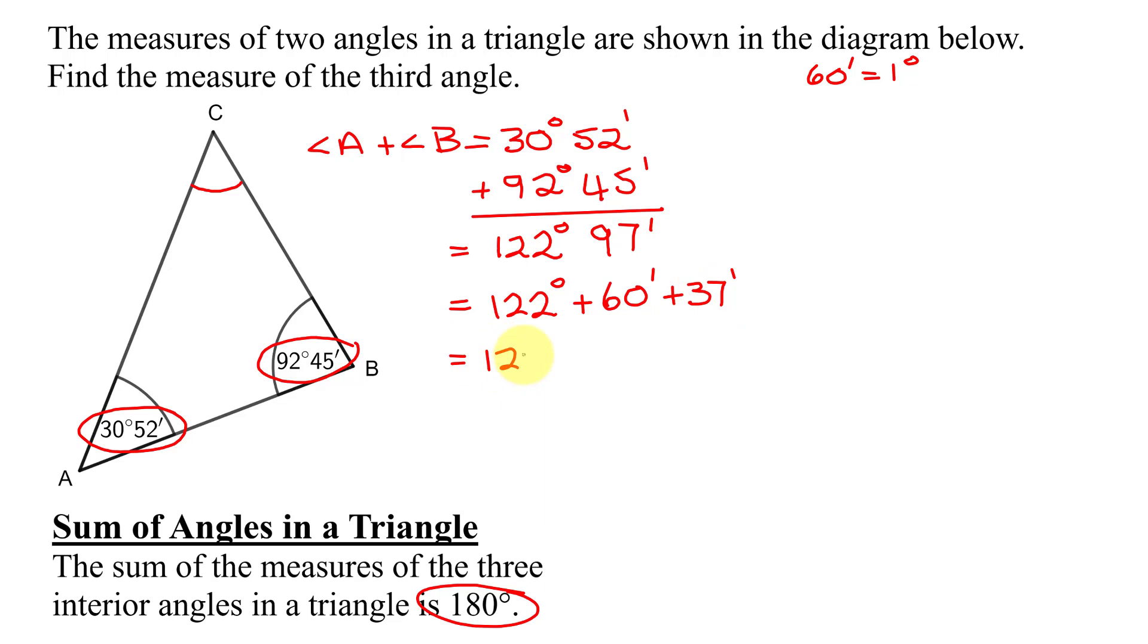The reason I did that is that 60 minutes is 1 degree. So, now, I have 122 degrees plus 1 degree, so that's 123 degrees, 37 minutes. That is the sum of angle A plus angle B.